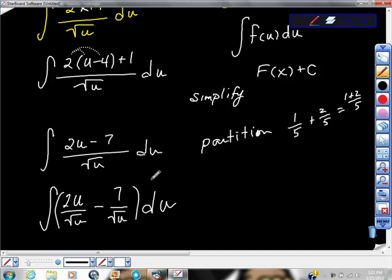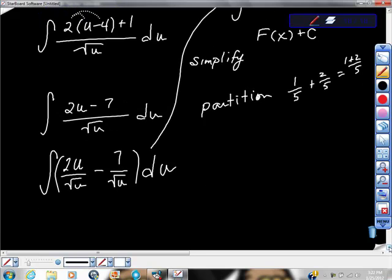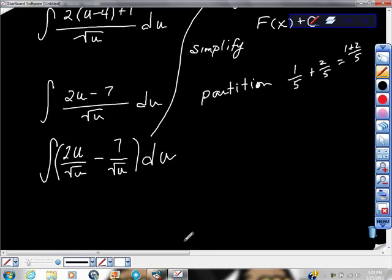Now this is victory, because we have f of u du, which means we can start to integrate. Before we do that, I have to simplify a little bit more. We get 2u to the 1 half minus 7u to the negative 1 half du. Now we're in integratable form, and from there, this thing should get really good.